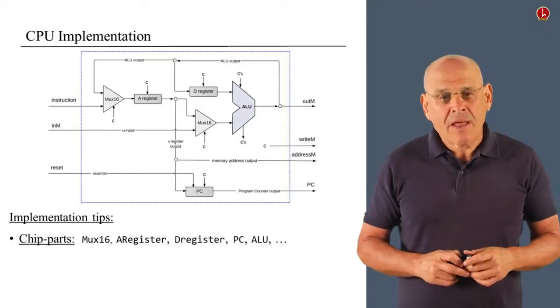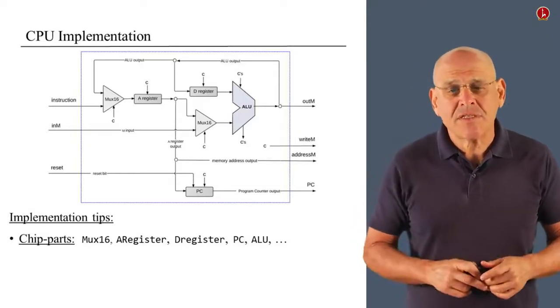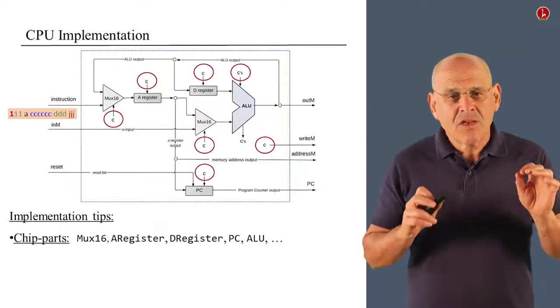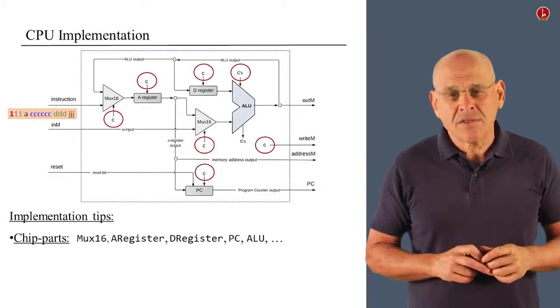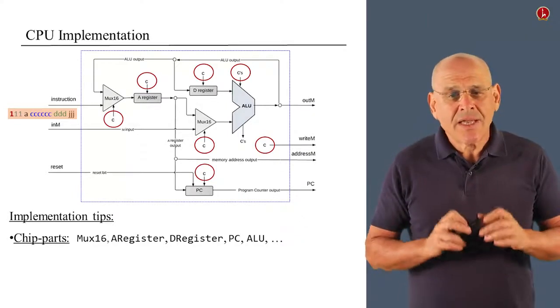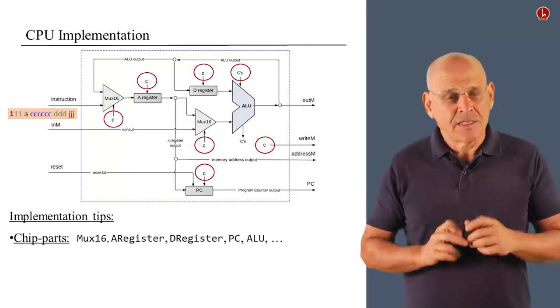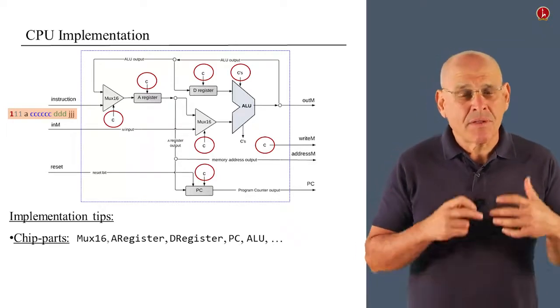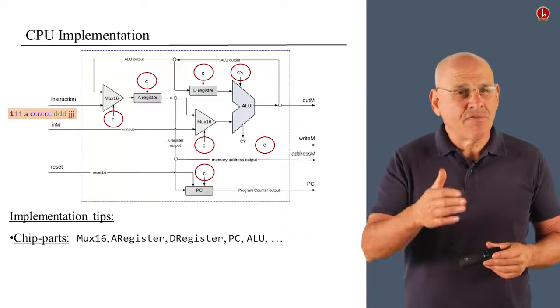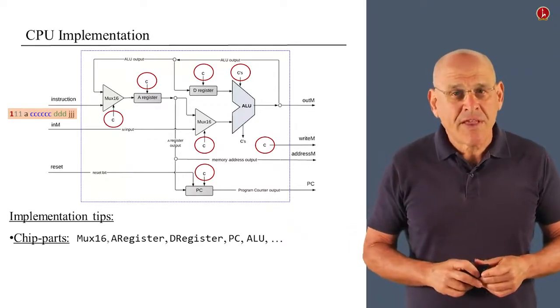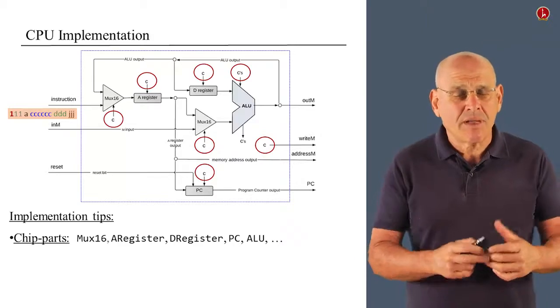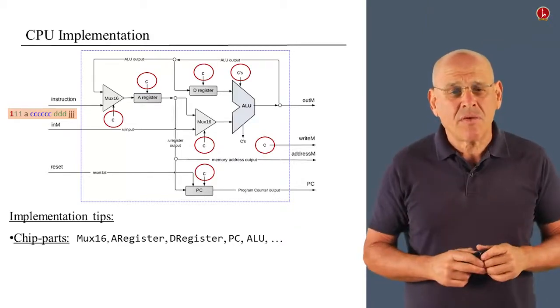So how do you do it? Well, another inspection of this diagram reveals that we have all these C control bits that you see here. And most of these control bits come from the current instruction. So here's, for example, a C instruction that consists, if you recall, of several fields. And I used color, which is obviously meaningless for the computer, but it helps me communicate with you.